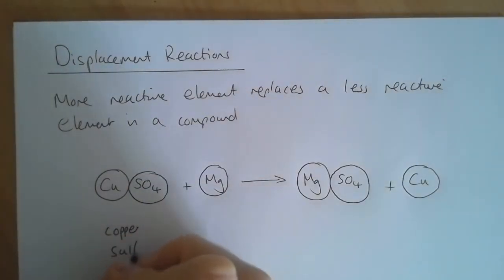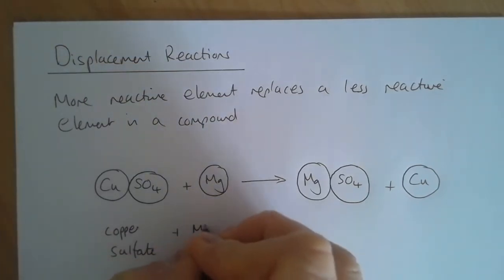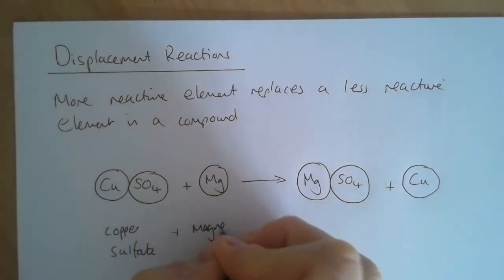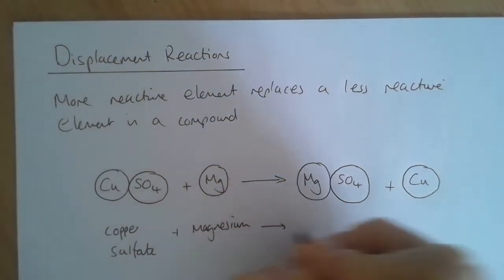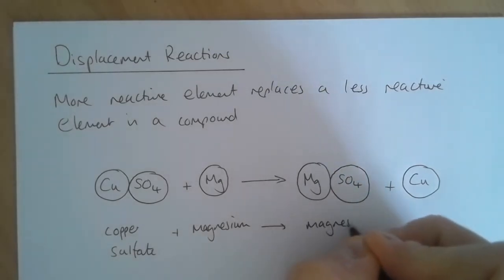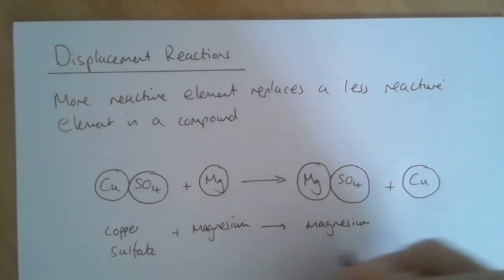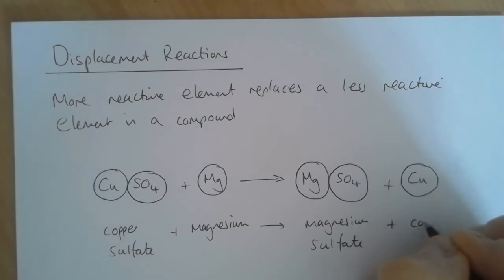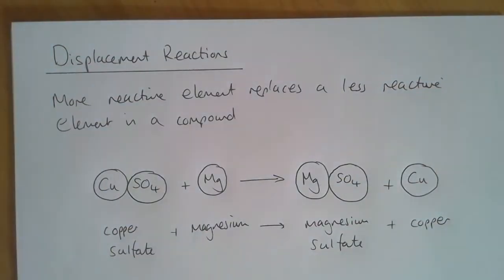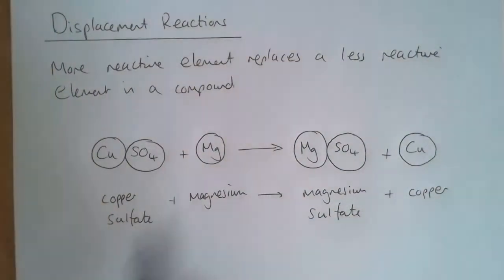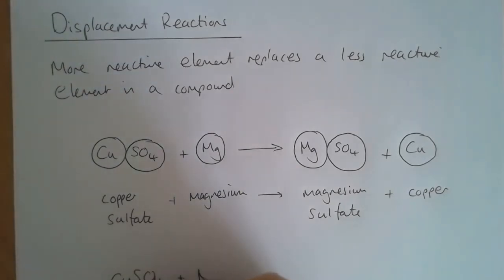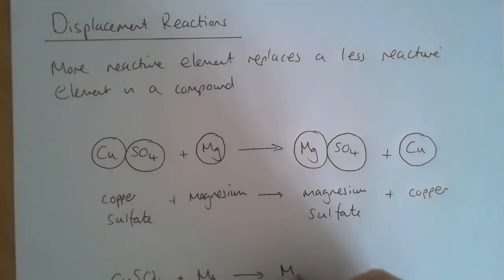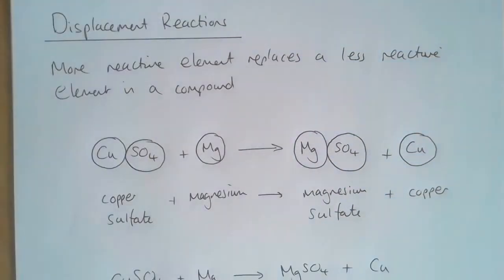Copper sulfate and magnesium react to give magnesium sulfate and copper. We could also do that as a symbol equation, which is pretty much what we've done up here: CuSO4 plus Mg goes to MgSO4 plus Cu.